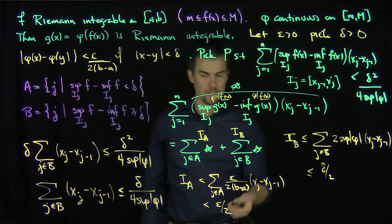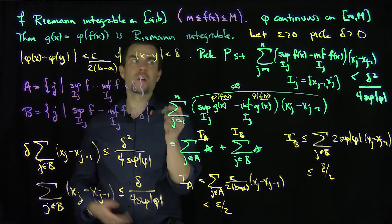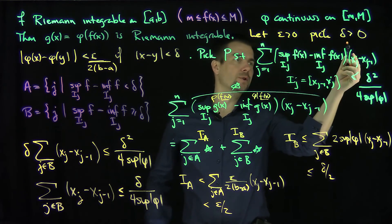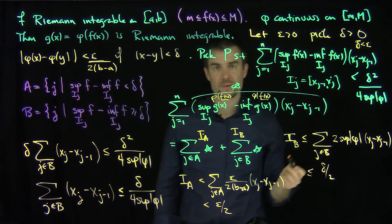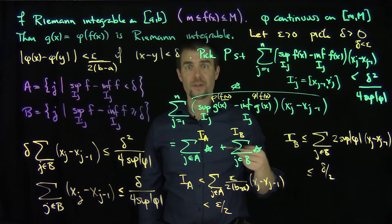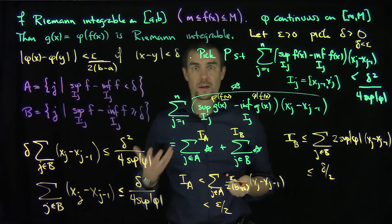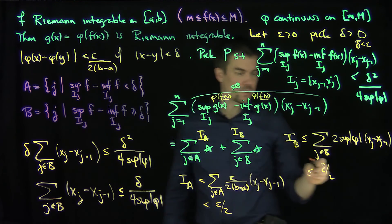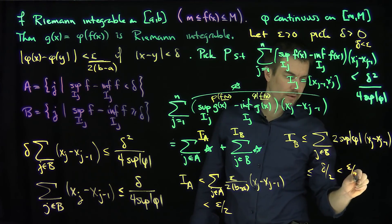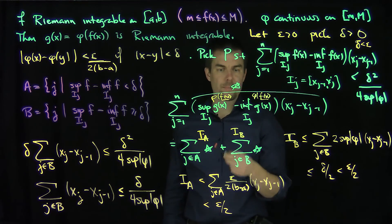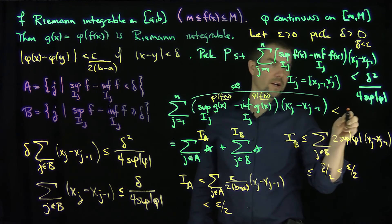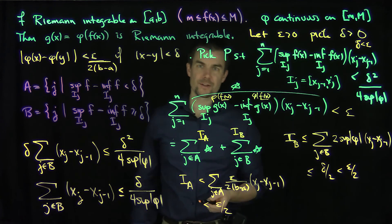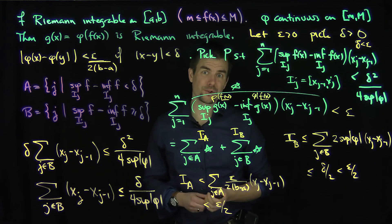So I_A + I_B is less than epsilon/2 plus delta/2. Since we can always assume without loss of generality that delta < epsilon, this gives us epsilon/2 + epsilon/2 = epsilon. Therefore the supremum condition is less than epsilon, and therefore the function g is Riemann-integrable. Thank you very much.